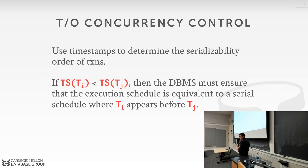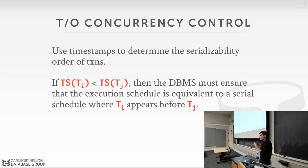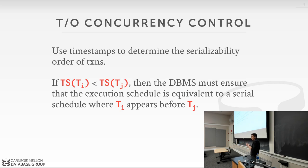The basic idea of any timestamp ordering protocol is that we use timestamps assigned to transactions to determine the serializability order of their operations. We introduce a function TS: if TS(Ti) < TS(Tj), the database ensures a schedule where the interleaved operations are equivalent to a serial order where Ti executes before Tj.